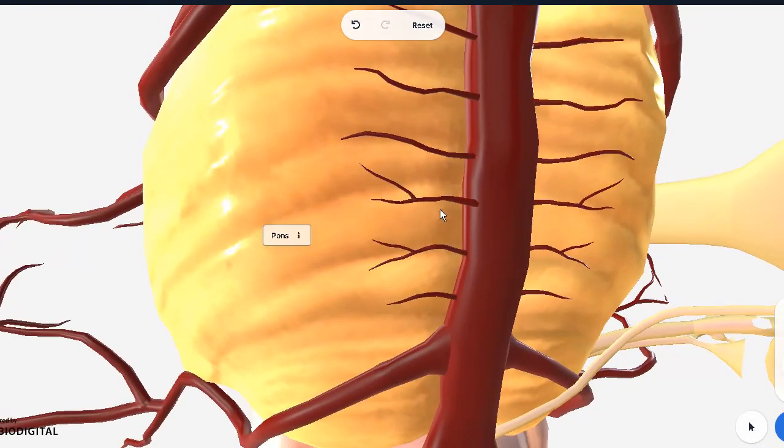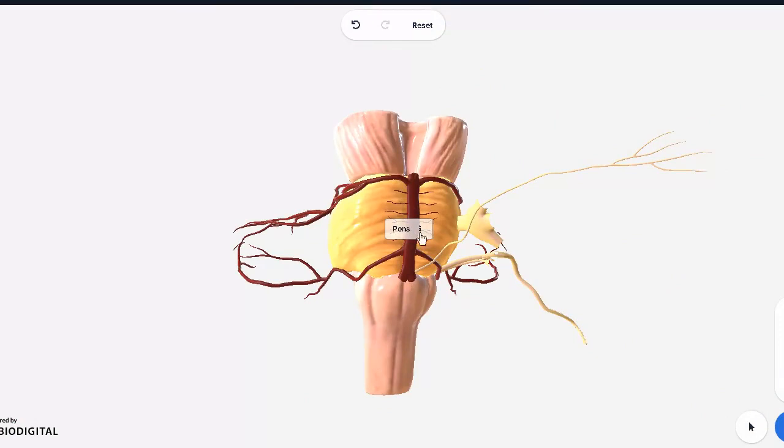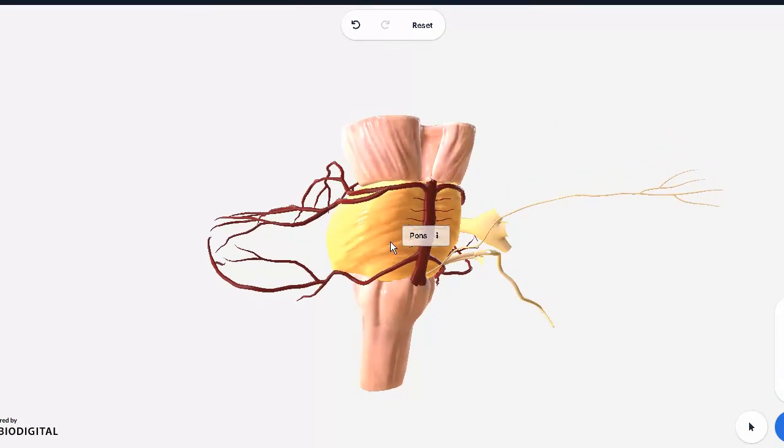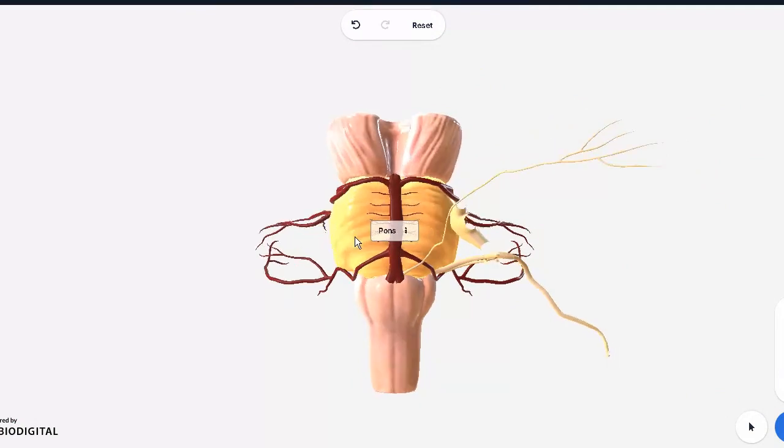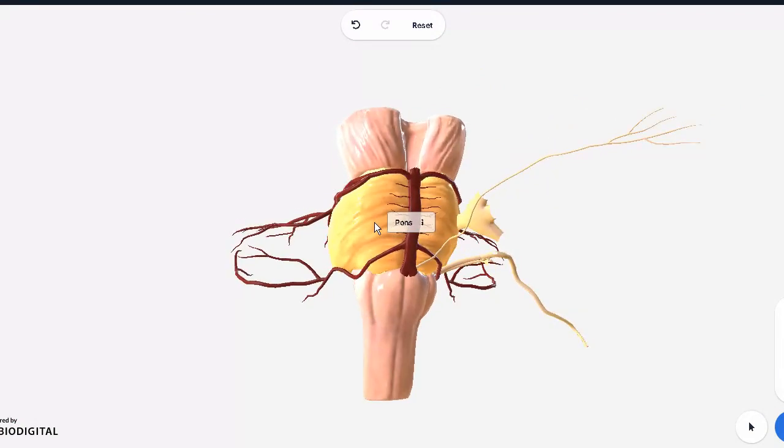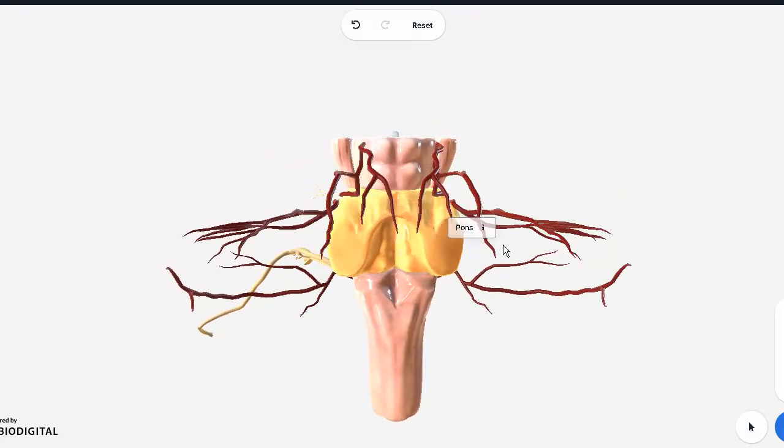On the front side, covered by this basilar artery, is your basilar groove. And aside from that, there's not much else to mention on the front side. It is quite large compared to the medulla and the midbrain volume-wise. Otherwise, there are not a lot of features on the front.